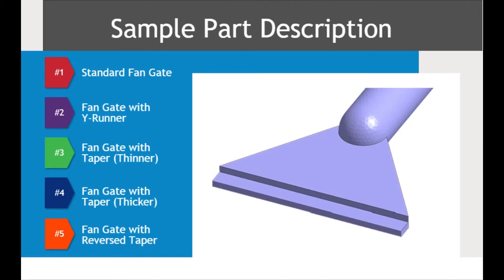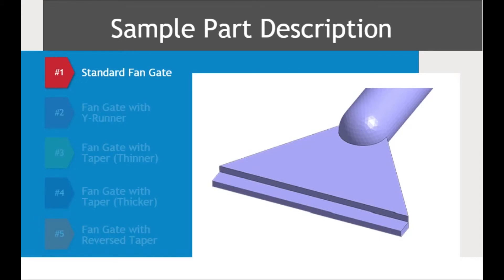In this lesson, we will evaluate five different gate styles and sizes. The first style is the standard fan gate. This style leads the material from the runner to the fan gate. For our example, the fan gate is stepped down to a thin edge of the part's surface. The image on screen is our first example, a standard fan gate without showing the part.